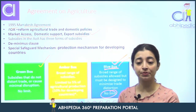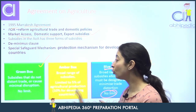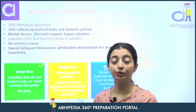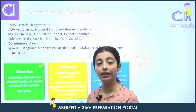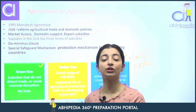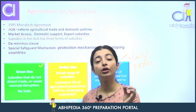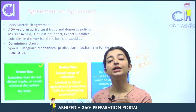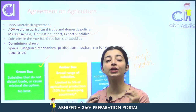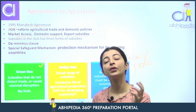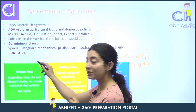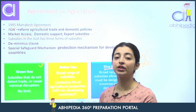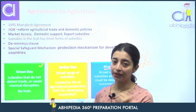Green box subsidies are those subsidies which are considered non-limiting by WTO — yeh non-trade distorting hain. Kyun? Kyunki ye direct subsidies nahi hoti hain. Zyadatar ye hota hai ki they are not product specific, and they are mostly based upon agricultural environment. Agricultural environment ko better karne ke liye jo subsidies provide ki jaati hain woh aati hain green box mein — jaise ki water ya electricity supply karna.